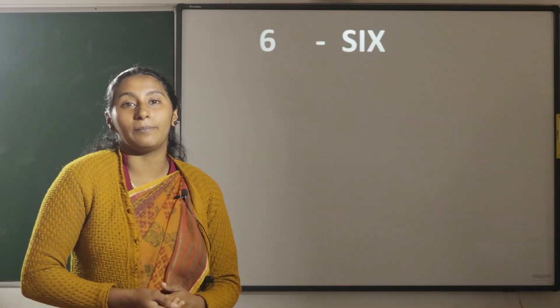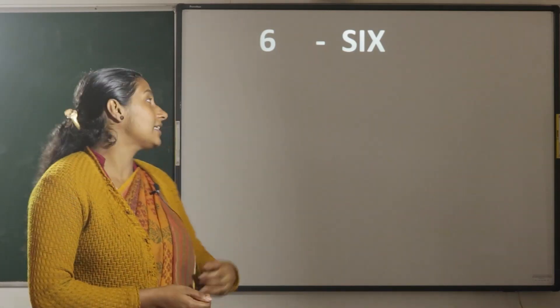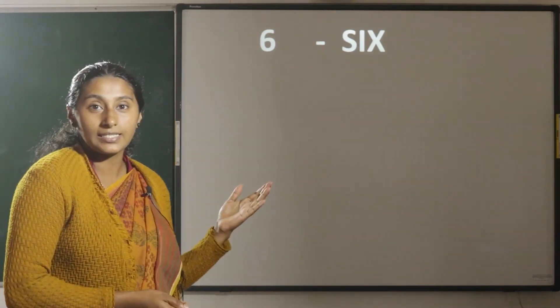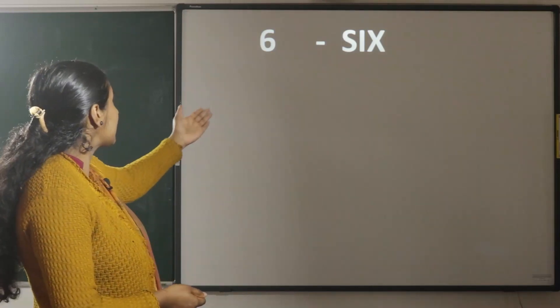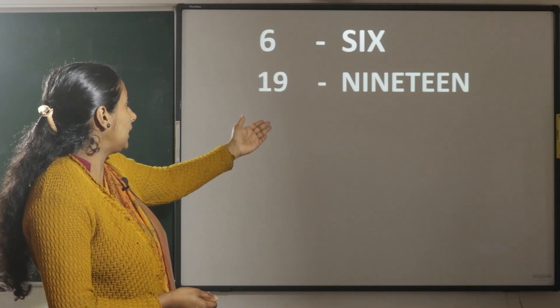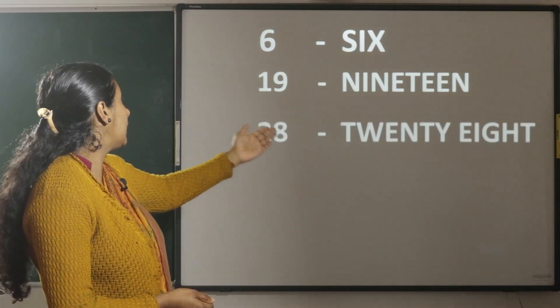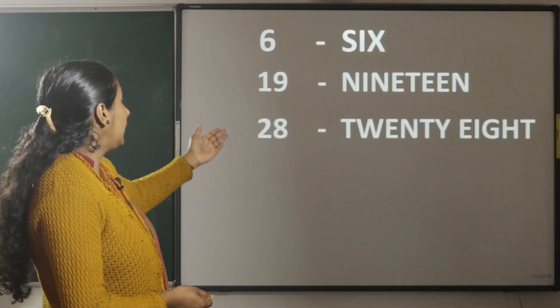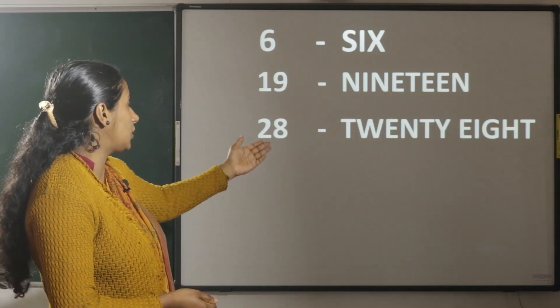We can also write the numbers in words. This is the way of writing the numbers in words. S-I-X is 6, N-I-N-E T-E-E-N is 19,